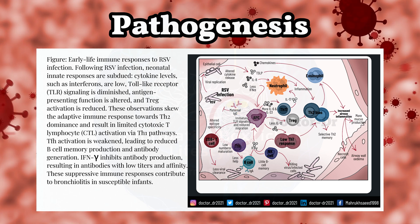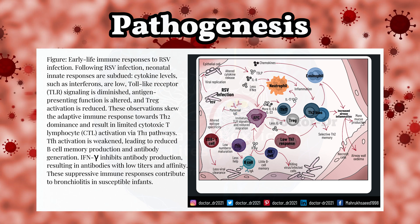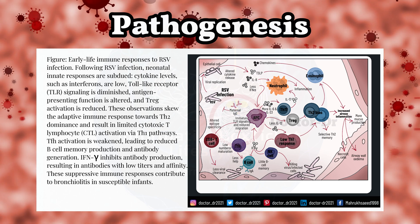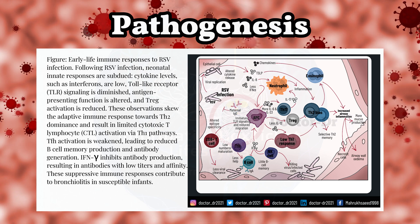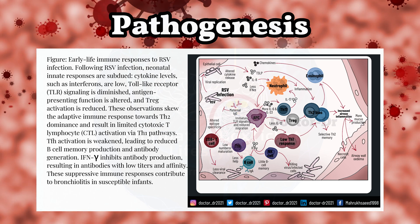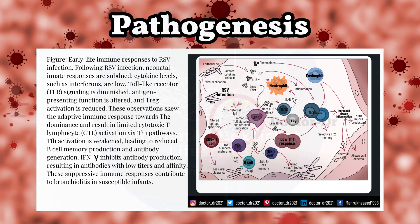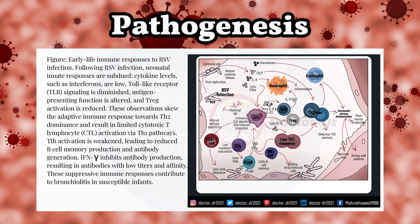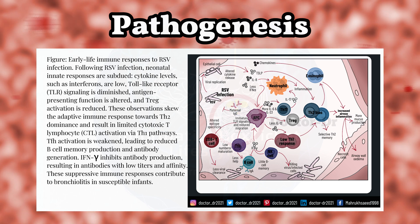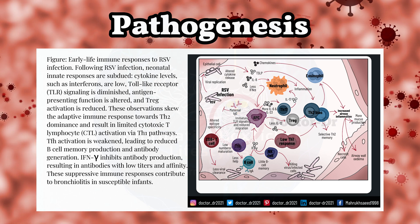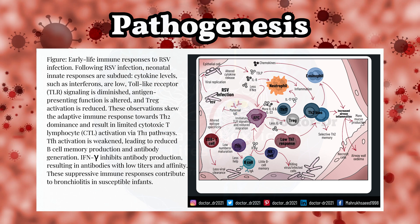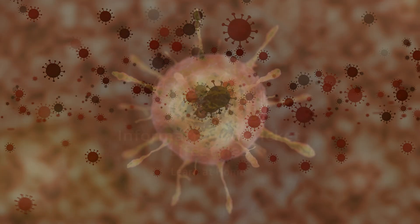Additional effects may include impaired ciliary function, reduced mucus clearance, airway swelling, and decreased lung compliance. Following RSV infection, neonatal innate responses are subdued: cytokine levels such as interferons are low, toll-like receptor (TLR) signaling is diminished, antigen-presenting function is altered, and TREG activation is reduced. These observations skew the adaptive immune response towards TH-2 dominance and result in limited cytotoxic T-lymphocyte (CTL) activation via TH-1 pathways. TFH activation is weakened, leading to reduced B-cell memory production and antibody generation, with resulting antibodies having low titers and affinity. These suppressive immune responses contribute to bronchiolitis in susceptible infants.